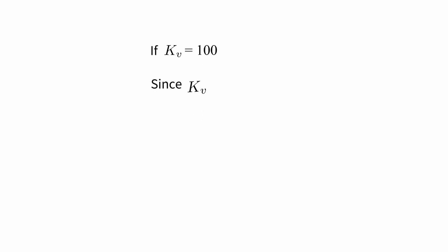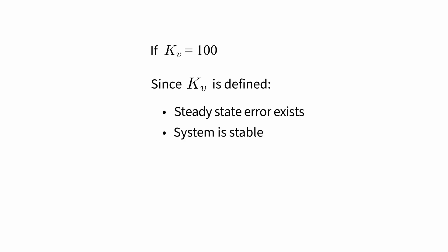These error constants can be considered part of the specifications during the design of control systems, as these constants themselves convey a surprising amount of information. Let's assume we have Kv as 100. Since Kv is defined, this implies a steady state error exists and the system is stable. And Kv being constant just means that the system is of type one. Next, we can tell that the input being applied is a ramp. Finally, we can tell the error between the input ramp and the output ramp is 1 over Kv, which means the error is 0.01 at steady state.